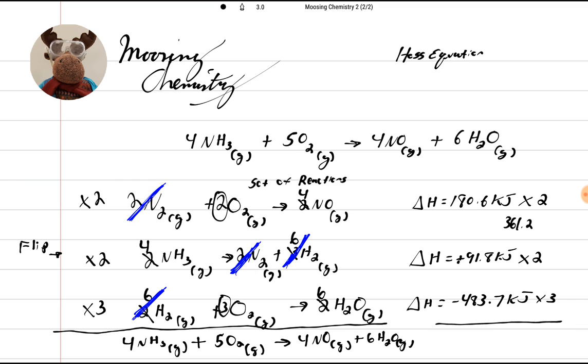Now, we're going to go 91.8 times 2. That's going to give me 183.6. Now, we're going to take negative 483.7 times 3. That's going to give me negative 1451.1.